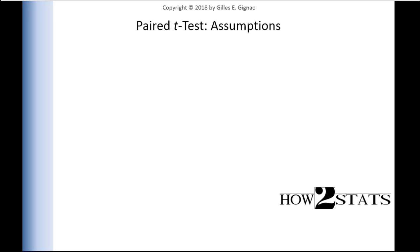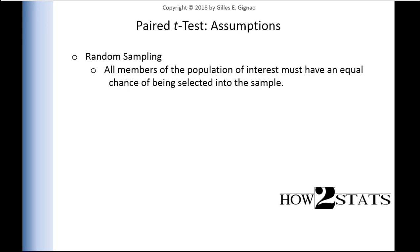In this video, I'm going to talk about the assumptions associated with the paired samples t-test. The first assumption I describe in the textbook is random sampling. That's true of essentially all inferential statistics. The way to think about random sampling is that all members of the population of interest must have an equal chance of being selected into the sample.